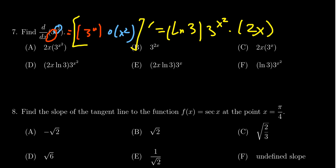So when you put that together, we see that the correct answer would be 2x times the natural log of 3 times 3 to the x squared. So we see that the correct answer is D.